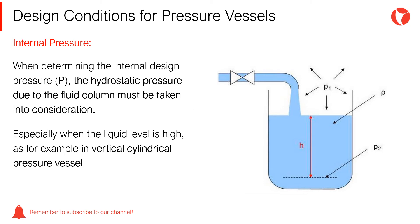When determining the internal design pressure P, the hydrostatic column — in other words, the hydrostatic pressure due to the fluid column — must be taken into consideration. This is especially important when the liquid level is high, for example in vertical cylindrical pressure vessels.